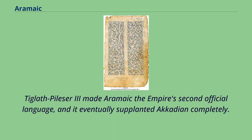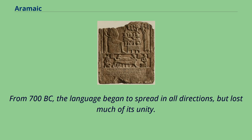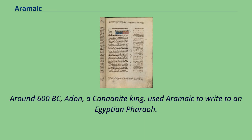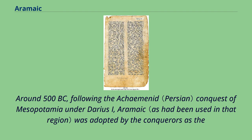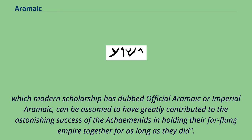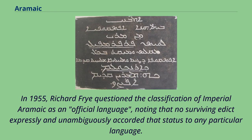From 700 BC, the language began to spread in all directions but lost much of its unity, with different dialects emerging in Assyria, Babylonia, the Levant, and Egypt. Around 600 BC, Adon, a Canaanite king, used Aramaic to write to an Egyptian pharaoh. Around 500 BC, following the Achaemenid conquest of Mesopotamia under Darius I, Aramaic was adopted as the vehicle for written communication between the different regions of the vast empire. The use of a single official language — dubbed official Aramaic or imperial Aramaic — greatly contributed to the success of the Achaemenids in holding their far-flung empire together. In 1955, Richard Fry questioned the classification of Imperial Aramaic as an official language, reclassifying it as the lingua franca of the Achaemenid territories, suggesting its use was more pervasive than generally thought.